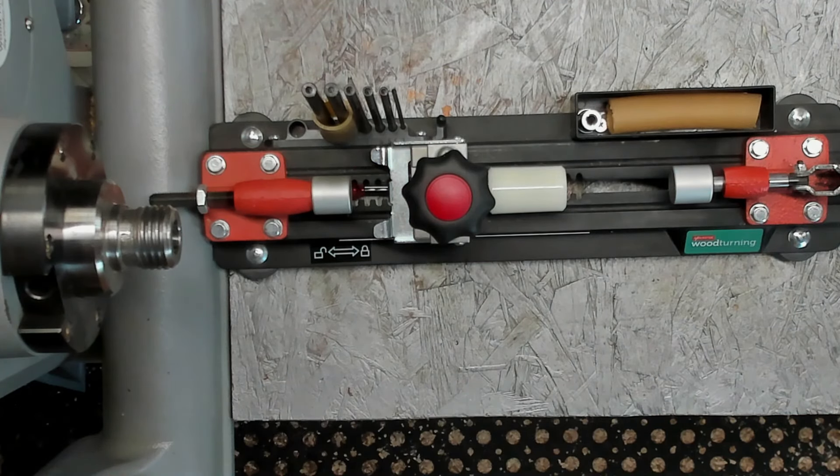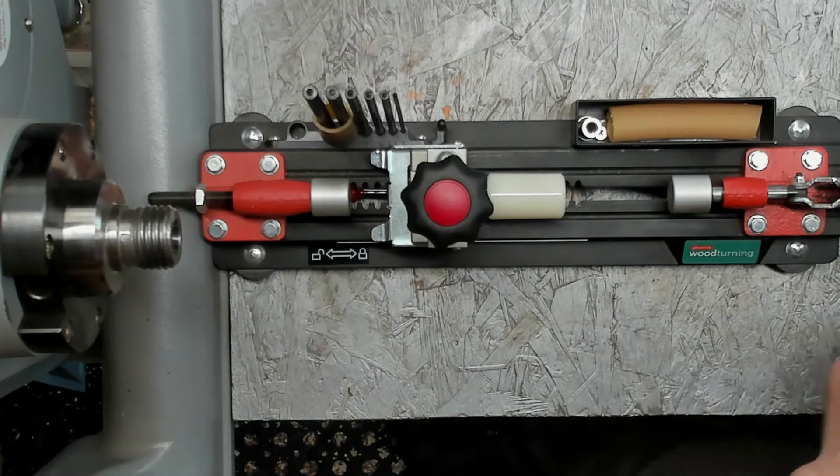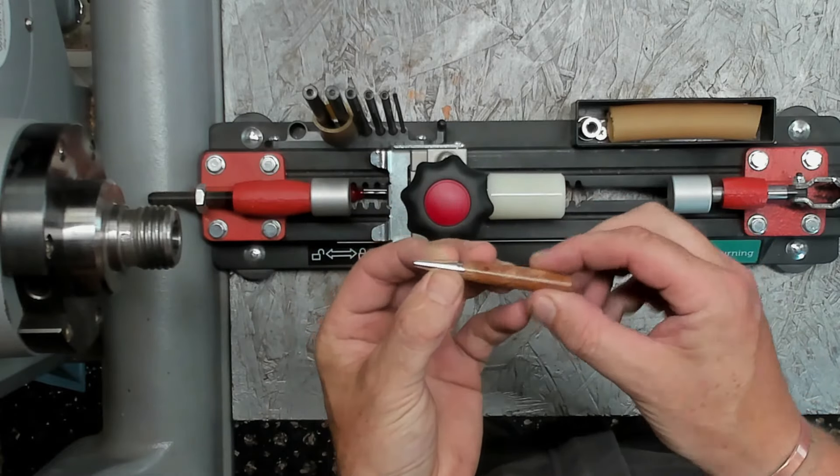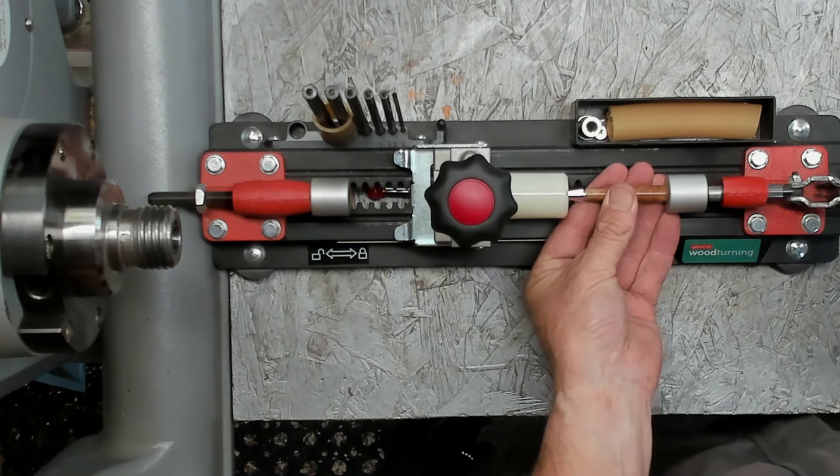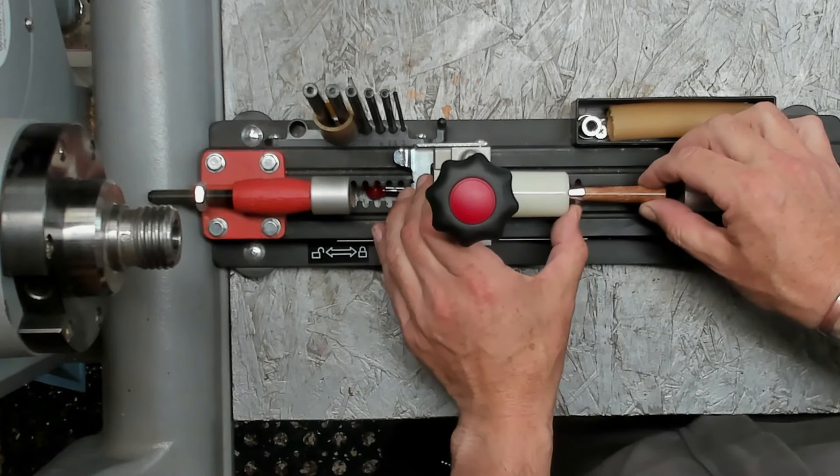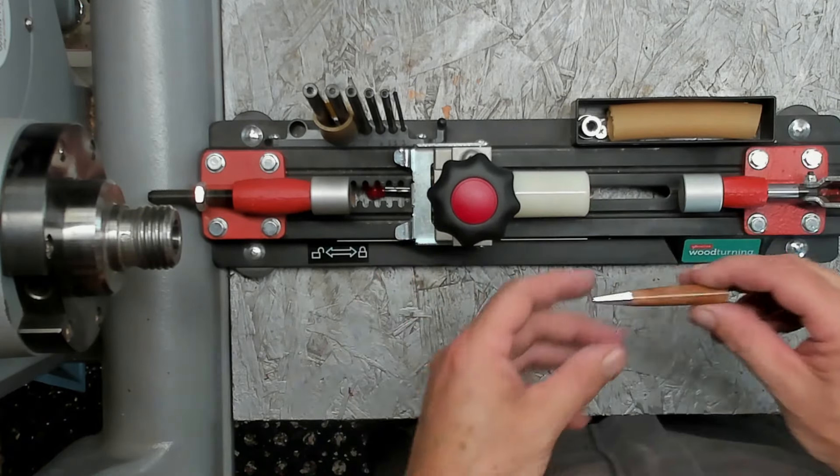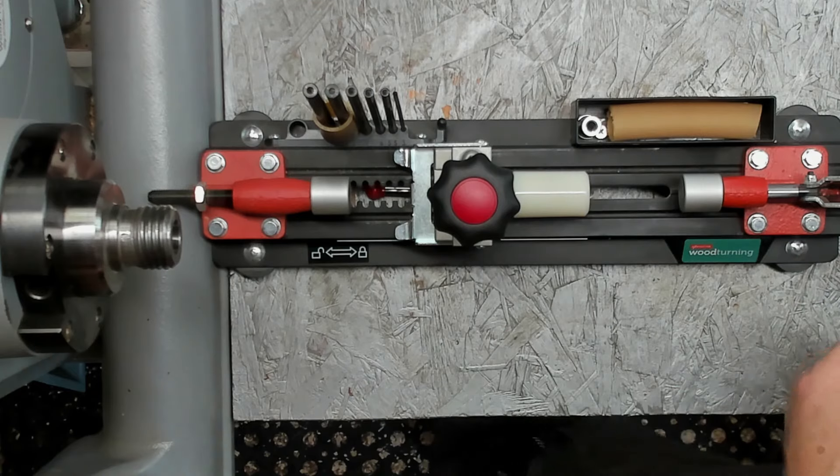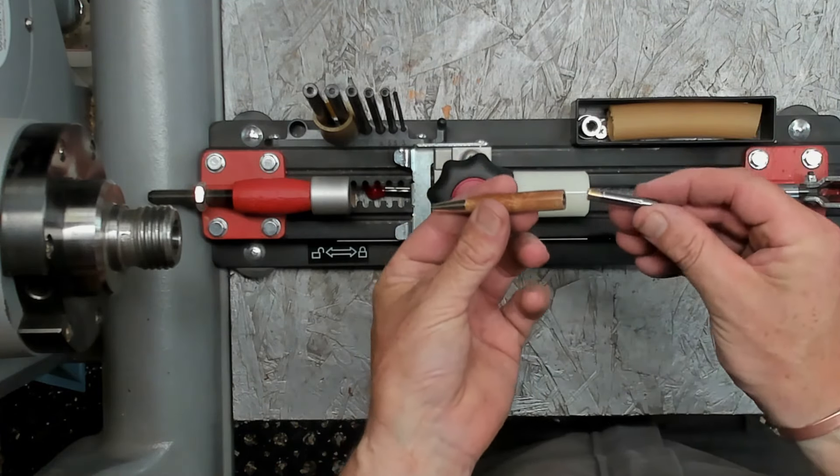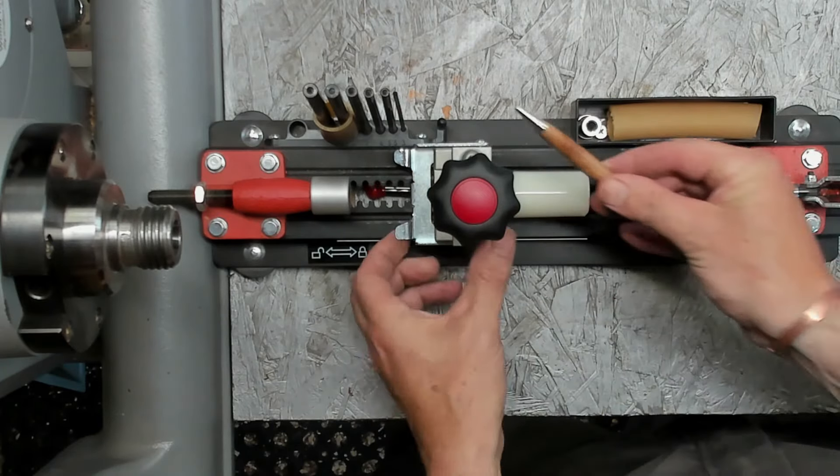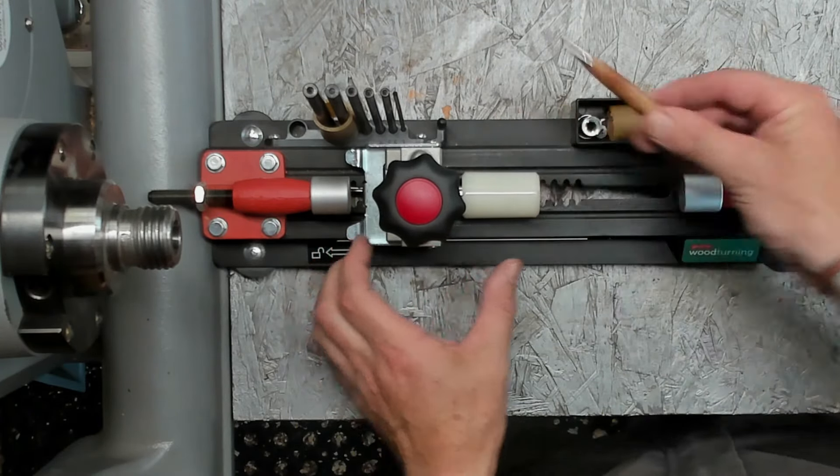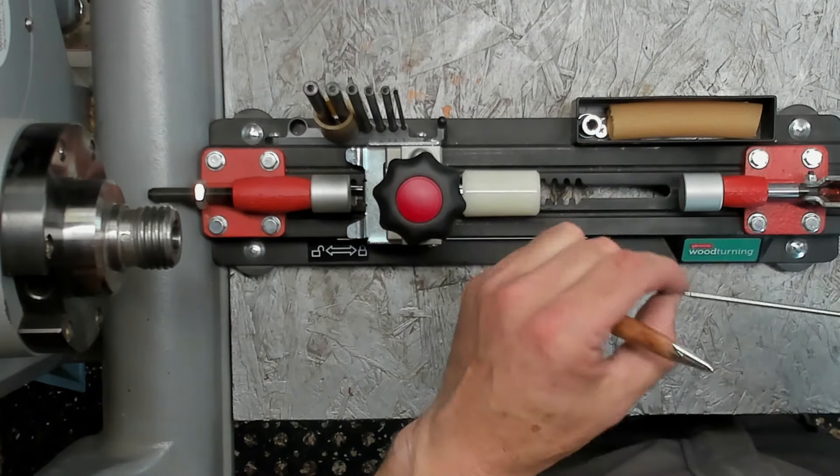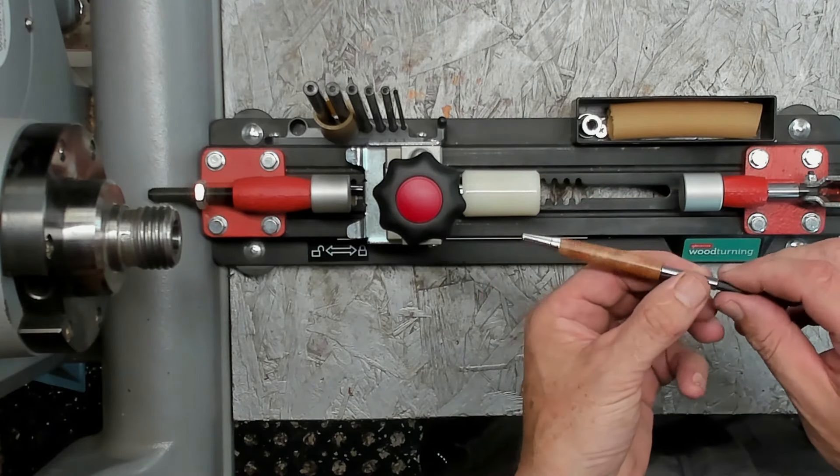Now just flip it around. Again, Jacobs chuck, need a 7mm drill bit again. This is a high-speed drill bit for steel. Again I want to drill around 500-600 RPM. It drills quite easy, it's only brass.